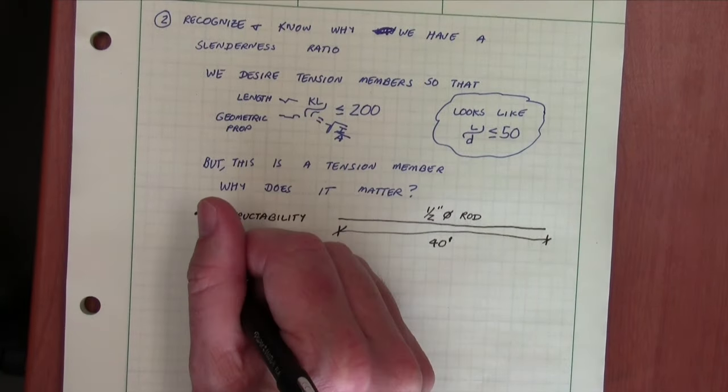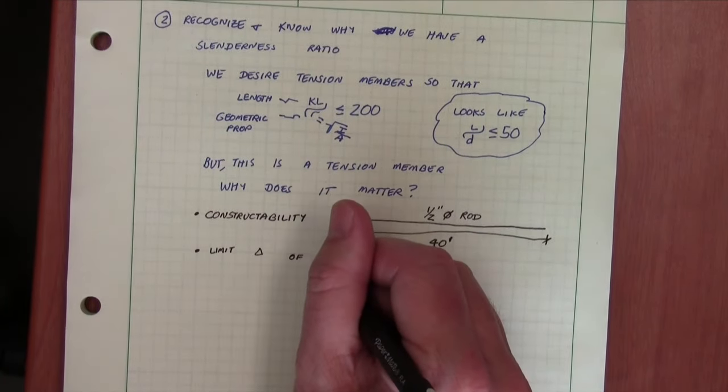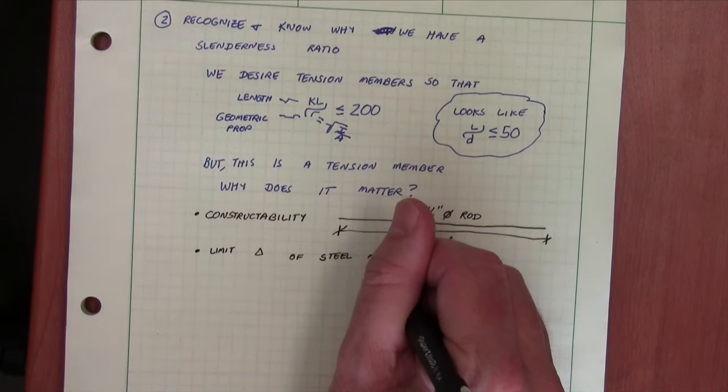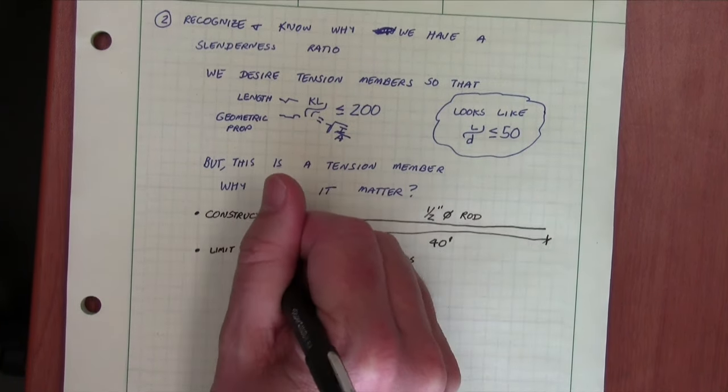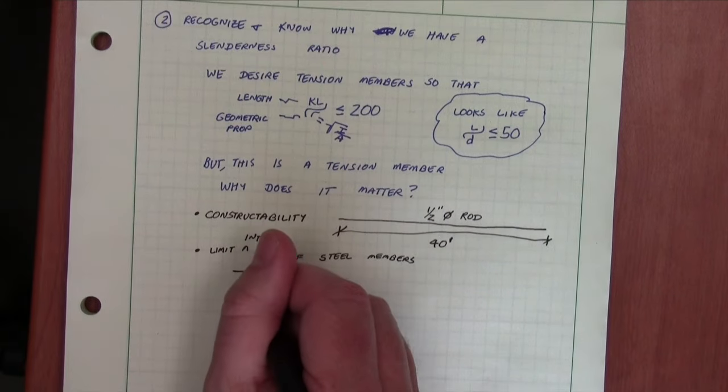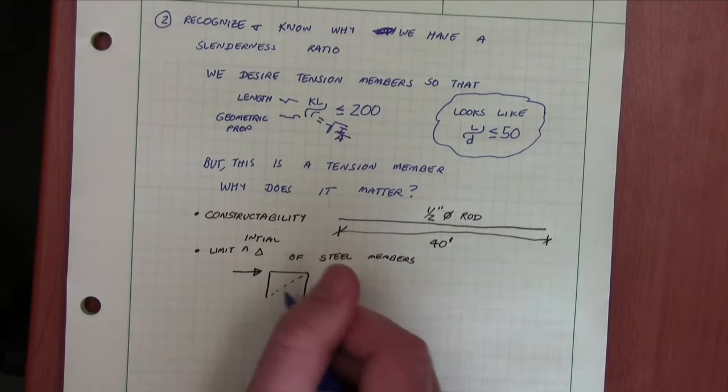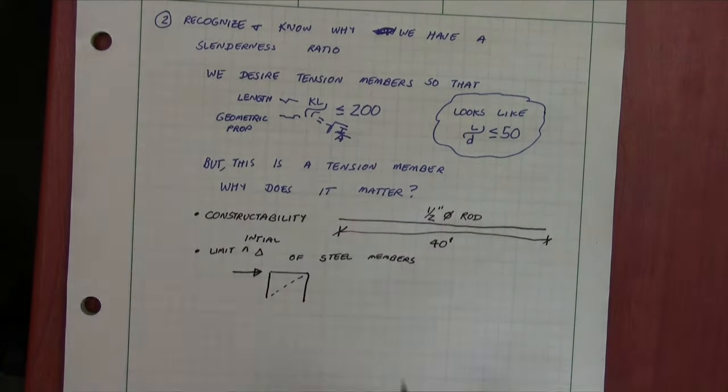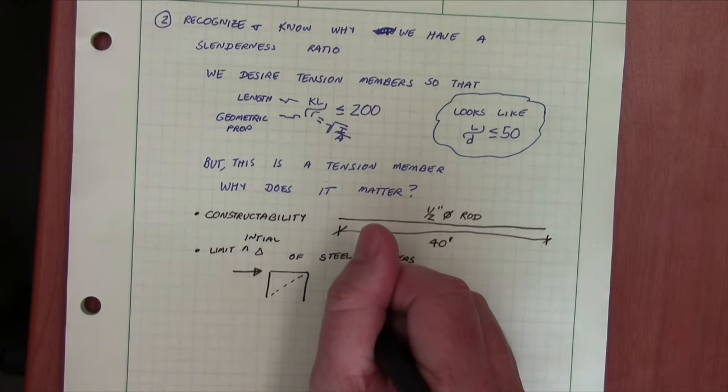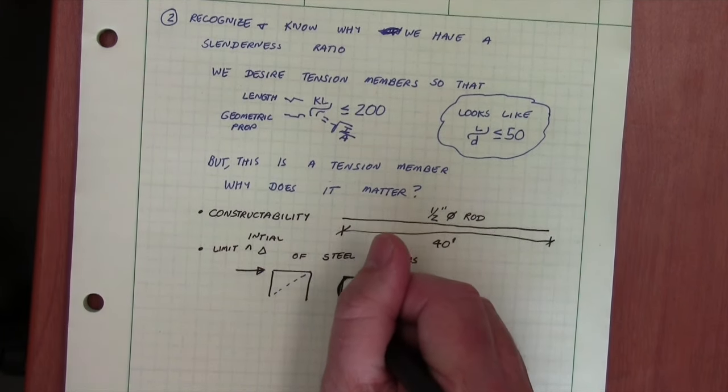Second is that it limits the initial deflection of steel members. So imagine we have that brace configuration we talked about earlier with wind load applied. If the member was really loose, imagine the deflection that would occur in the members before the brace began to take any tension.